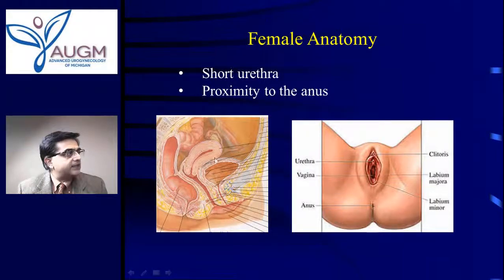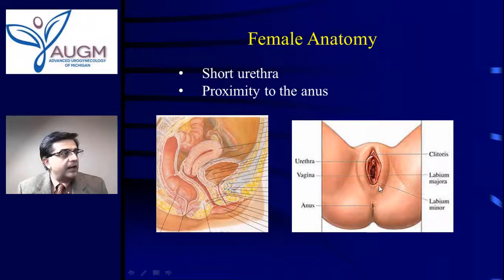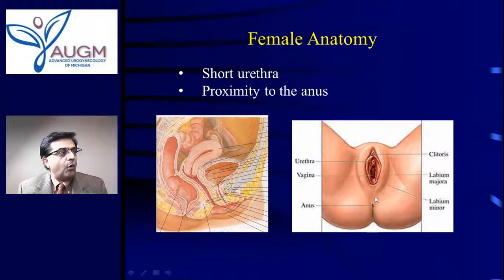Let's look at the female anatomy. The urethra is just a very short tube to the outside. Bacteria hanging around near the anus won't take long to go up this four-centimeter ladder and get into the bladder. The vaginal opening and the anus are quite proximate — not too far apart. And this area called the perineum, especially after childbirth, may not be as robust as possible. Therefore, bacteria may more easily gain entrance into the vaginal opening and then the urethra.